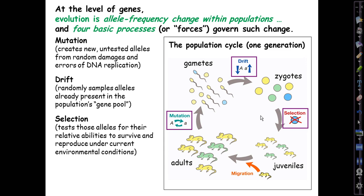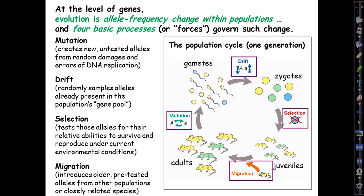And finally, there's migration, which introduces older, pre-tested alleles, ones that were created, managed not to be lost during the process of genetic drift, survived natural selection, and then entered a population from somewhere else where they had an appreciable frequency. And that's all there is to it.